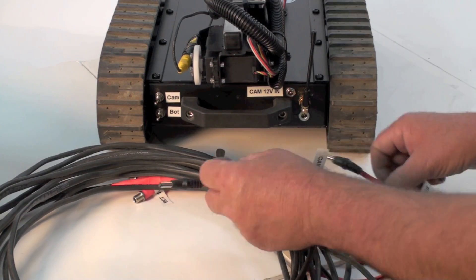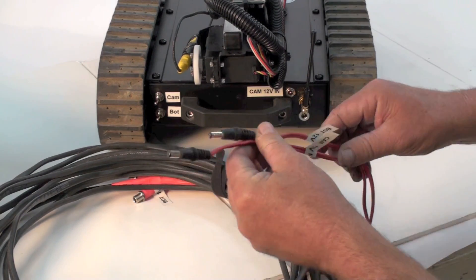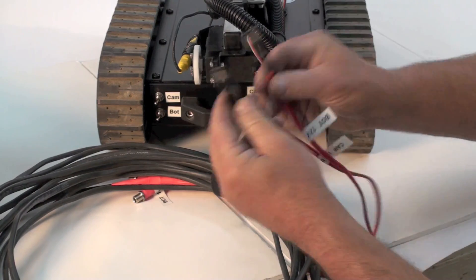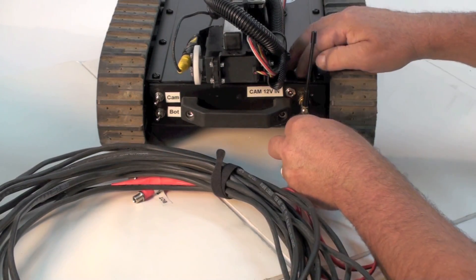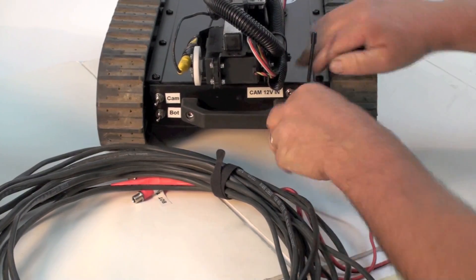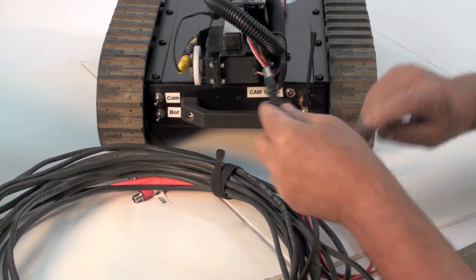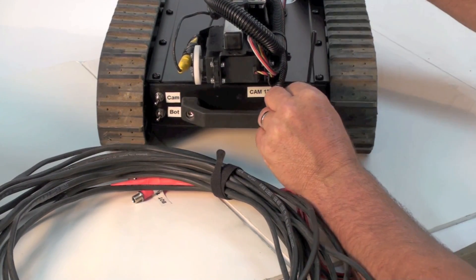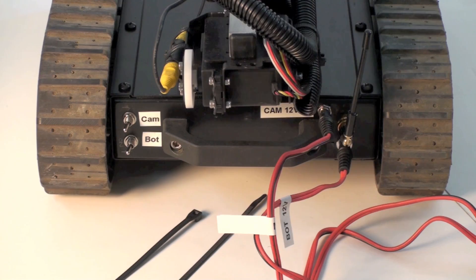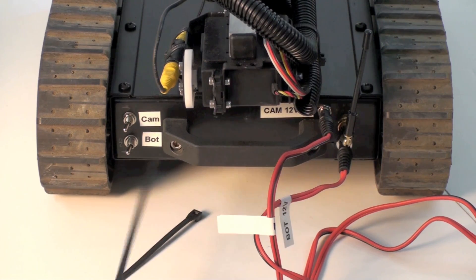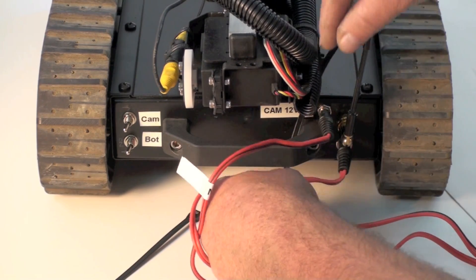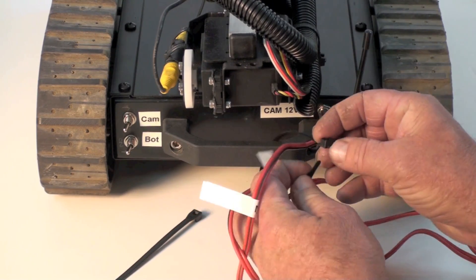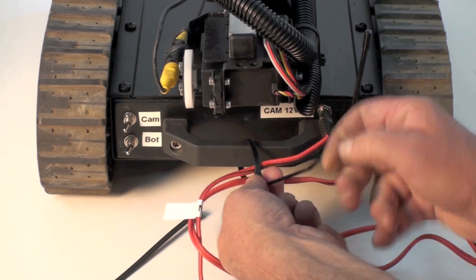This is the 50-foot tether and on one end you can see there are two male power plugs. One's labeled BOT and it gets plugged in the bottom. The other one's labeled CAM or camera and it gets plugged in the top. To keep these wires from being pulled out, I use some of these wire ties that are included and simply secure the wires to the back handle.